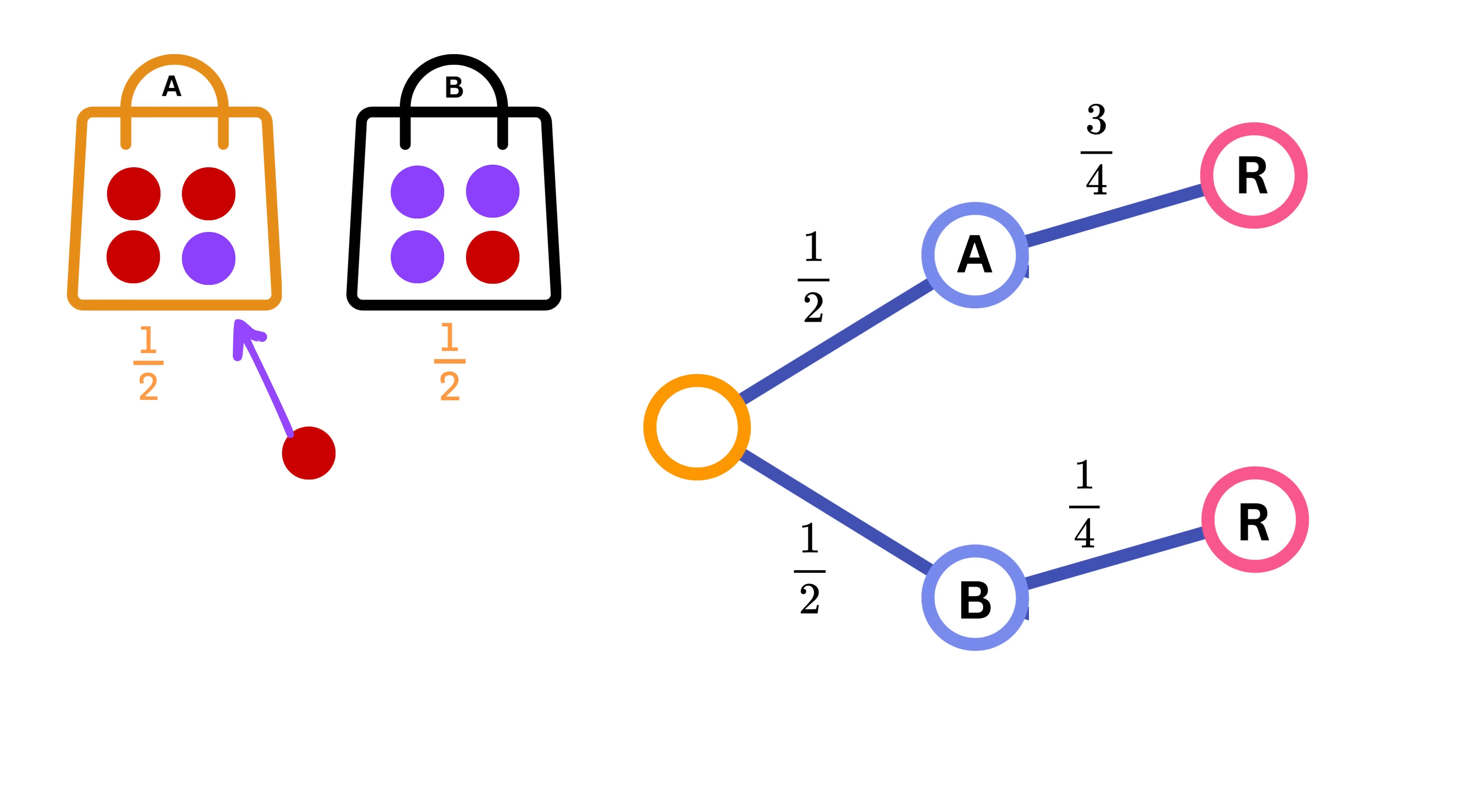Now, in that red world, there are two possible ways the ball could have appeared. Along the path, where we have bag A, then red, whose probability will be the product of 1/2 times 3/4, which equals 3/8. And the next is along the path where we have bag B, then red, whose probability will be the product of 1/2 times 1/4, which equals 1/8.